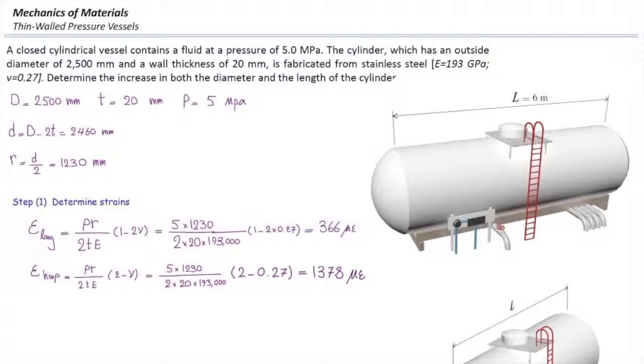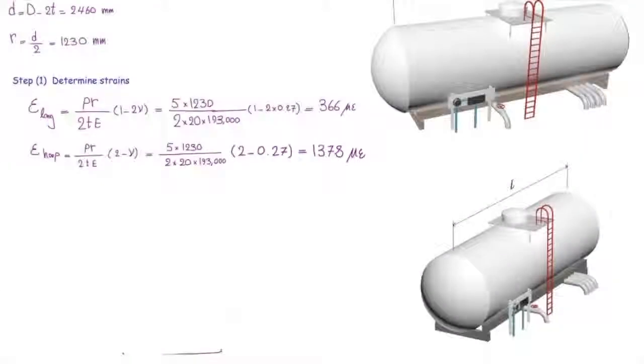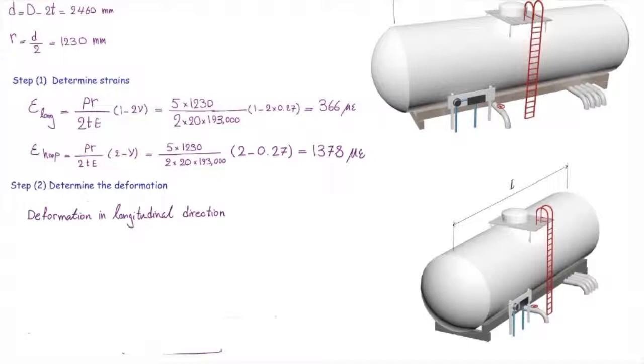Now I want to determine deformations in each direction. First, how much is the deformation in the longitudinal direction? Strain is deformation divided by initial length. We have determined strain, and we know the initial length in the longitudinal direction is given as 6 meters.